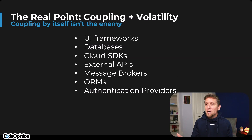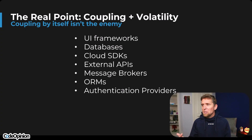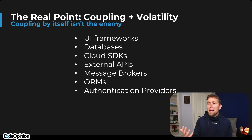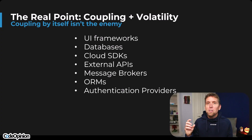When you think on the fringe, you think about adapters or IO related to potentially UI or your web framework, infrastructure concerns like your databases, cloud SDKs, external APIs that you have to call, message brokers, ORMs, auth providers — all of these things are separated from your core because you want stability. It's not that your core can't have dependencies.